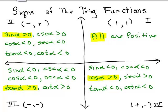One way to remember this is to just pay attention to the X or Y value for the sine and cosine. In the first quadrant, everything is positive so they're all positive. In the second quadrant, X is negative so the cosine is negative, and Y is positive so the sine is positive. In quadrant 3, they're both negative. And in quadrant 4, X is positive so the cosine is positive and the sine is negative. I associate X with the cosine and Y with the sine because cosine is X over R and sine is Y over R.